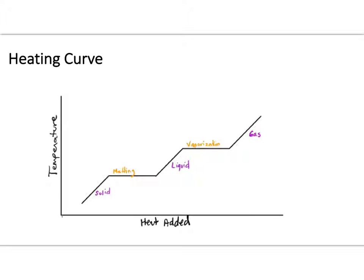Eventually, the heat added is no longer going into increasing kinetic energy. Instead, it's used to separate the molecules within the solid. The energy being added is now going into separating those particles from one another, which increases their potential energy. That's why we see a plateau — temperature stays constant during the phase change.